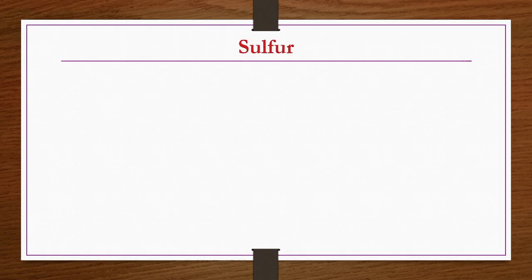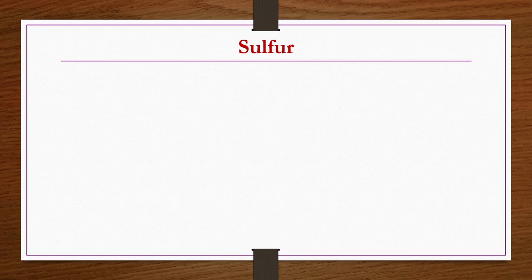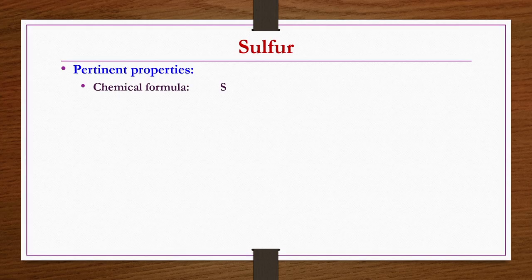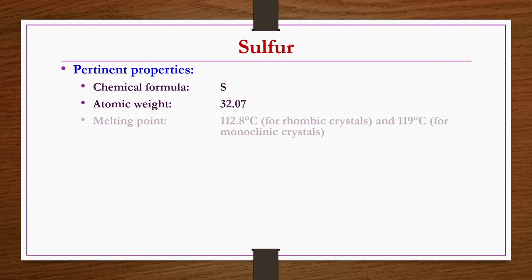In the sulfur industry, we will follow a similar lecture pattern as for fuel and industrial gases — covering pertinent properties, quantitative requirements, raw materials, reactions, different processes and flow charts for production, along with major engineering problems and economics. For sulfur, the chemical formula is S, atomic weight is 32.07. The melting point is 112.8°C for rhombic crystal form and 119°C for monoclinic crystal form. The boiling point is 444.6°C.